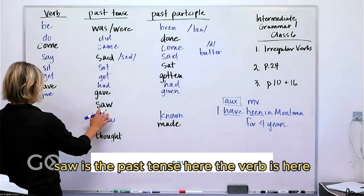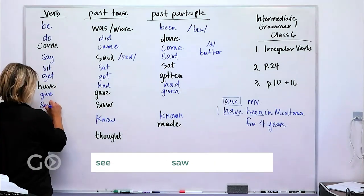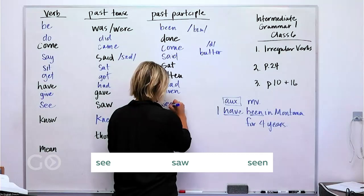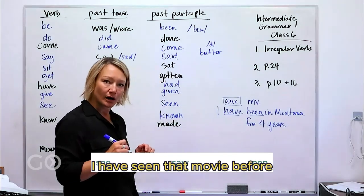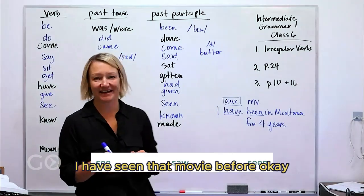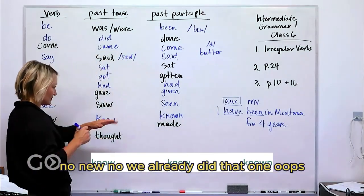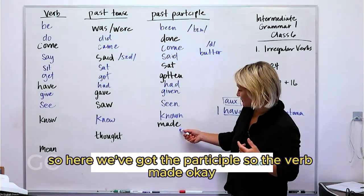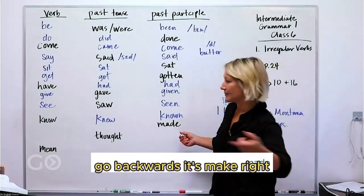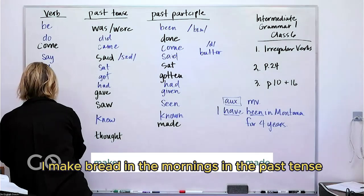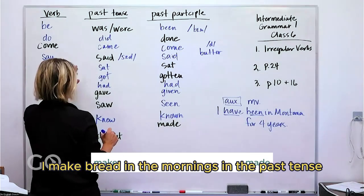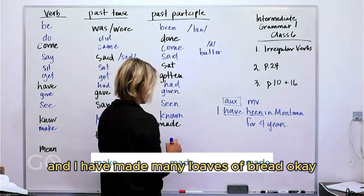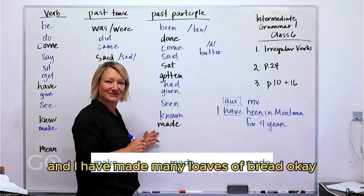'Saw' is the past tense — the main verb is 'see.' So: see, saw, seen. 'I have seen that movie before.' Then we have the participle 'made' — going backwards, the verb is 'make.' I make bread in the mornings. Yesterday I made bread. And I have made many loaves of bread.